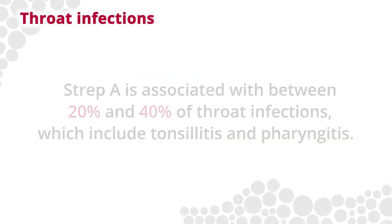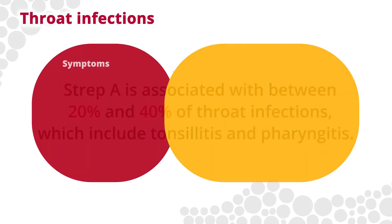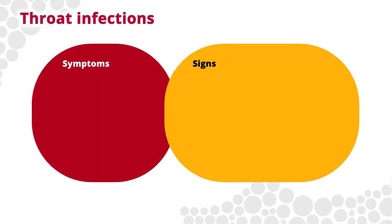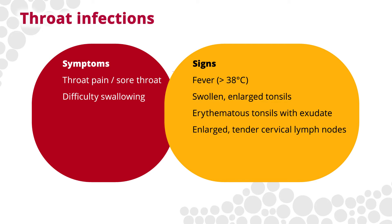Throat infections. Strep A is associated with between 20 and 40% of throat infections, which include tonsillitis and pharyngitis. Symptoms and signs of Strep A throat infections typically include pain and difficulty swallowing, fever, enlarged tonsils with exudate, enlarged tender lymph nodes, and reluctance to eat and drink.